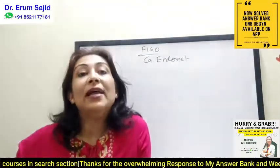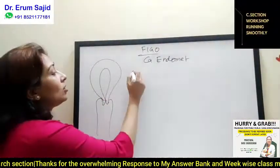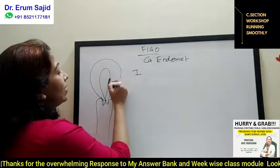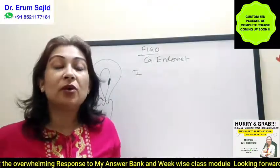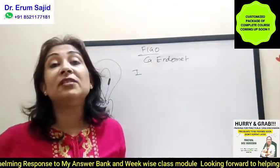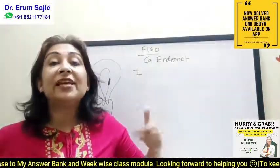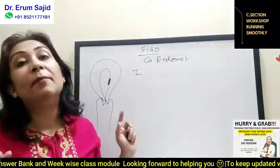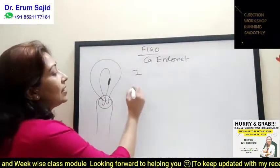Stage 1 in CA endometrium is a carcinoma localized only to the corpus. Anything limited to the corpus, or at maximum involving cervical glands, is stage 1. Stage 2 is spread beyond the corpus but limited to the cervix.